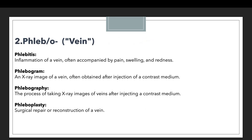The next prefix is phleb or phlebo. When a medical terminology uses the prefix phleb or phlebo, it means it is related to a vein. For example, phlebitis means inflammation of a vein, often accompanied by pain, swelling, and redness. If a patient is suffering from phlebitis, they suffer from inflammation of a vein, sometimes accompanied by pain, swelling, and redness. This condition is defined using the term phlebitis, which starts with the prefix phleb.